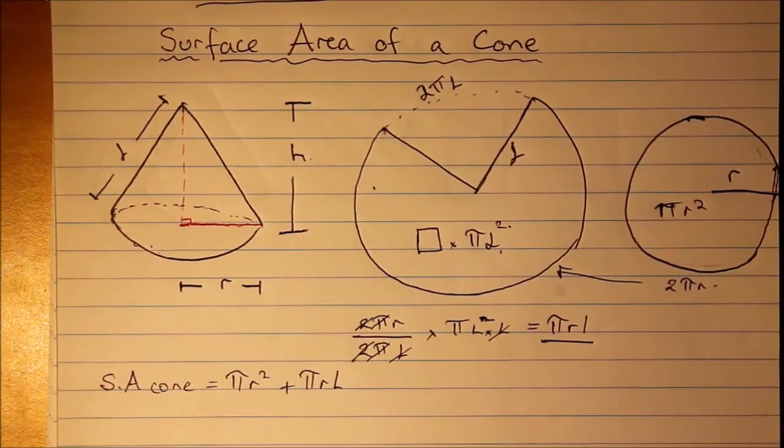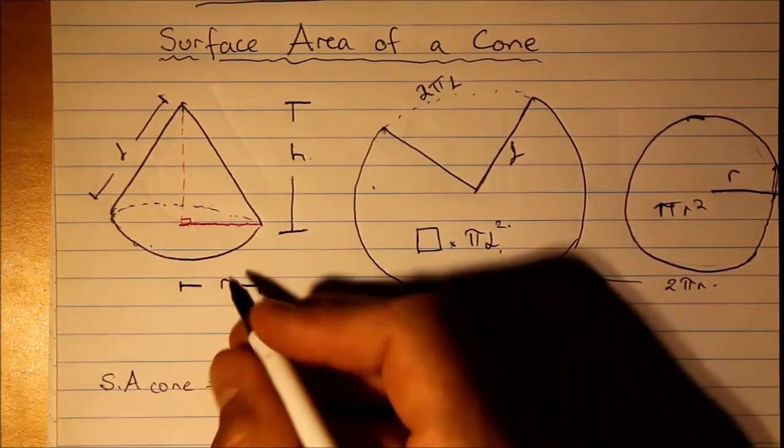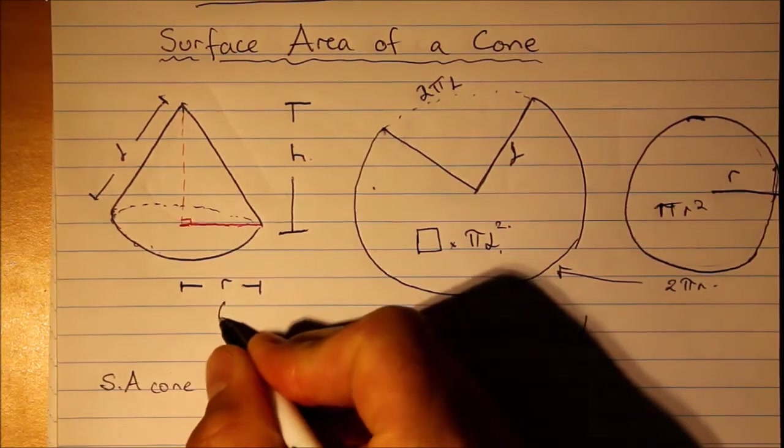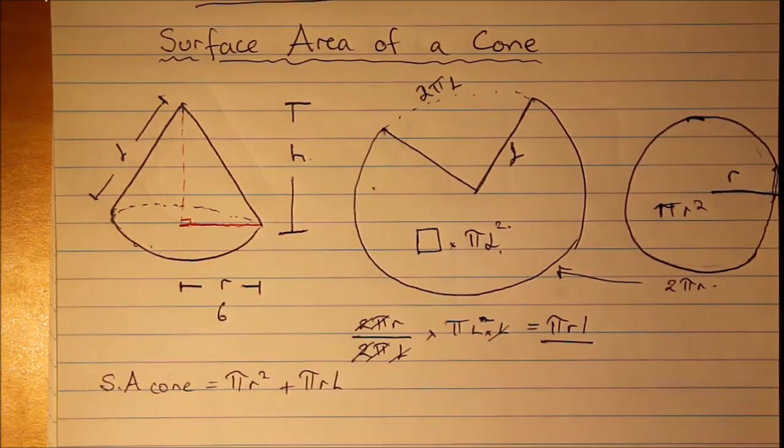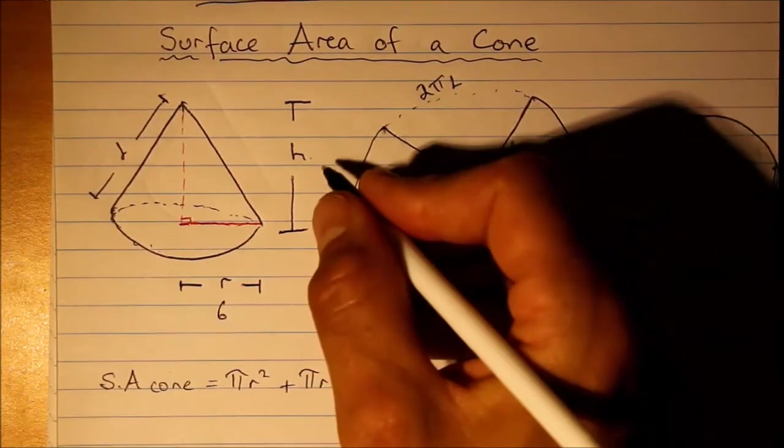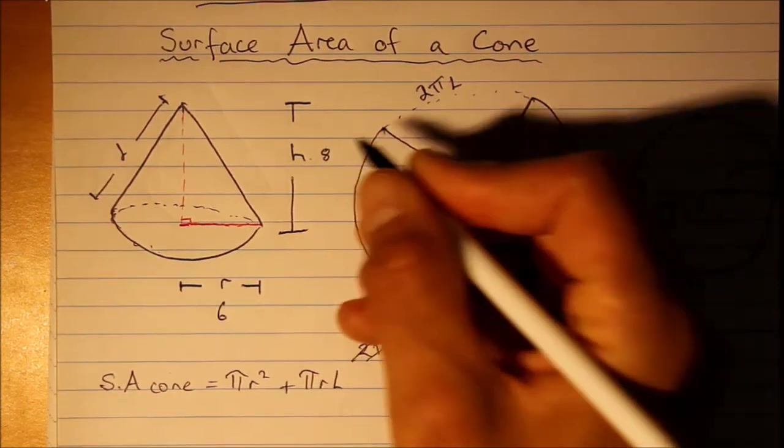So let's put in some dimensions. We'll say that the radius here could be 6 units, and this height I will say is 8 units.